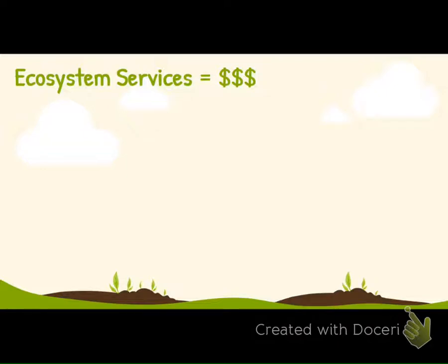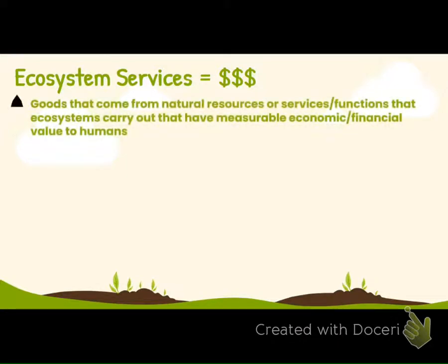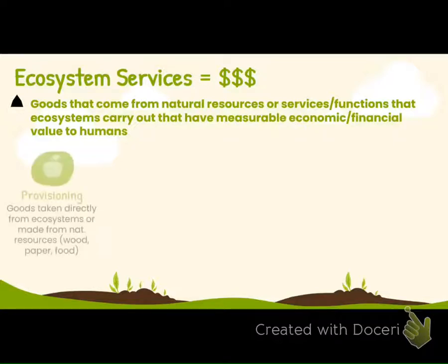So what are ecosystem services — how do we benefit? They are basically goods that come from natural resources, or services and functions that ecosystems carry out, leading to some economic or financial value to humans. The first type is called provisioning, where goods taken directly from the ecosystem are made into natural products, such as wood or food.